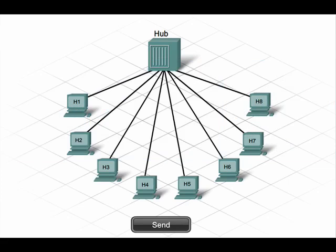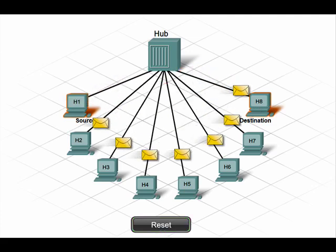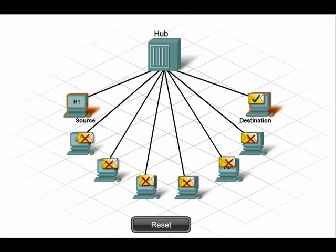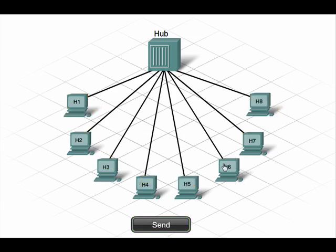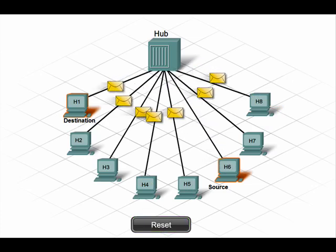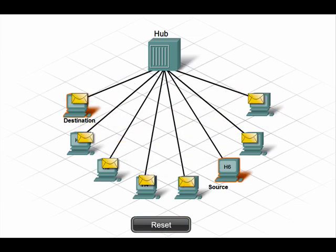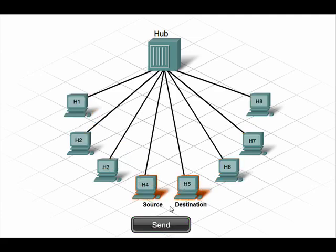Traditional Ethernet that uses a hub rather than a switch is a functional yet inefficient technology. It uses a logical bus topology, which means the hub forwards traffic out all ports to all connected devices, not just the one device to which the frames are addressed. This situation is inefficient because all hosts receive the frames, even if the frames are not meant for them. If a frame is not meant for a specific device, that device discards the frame.